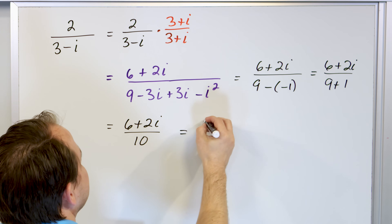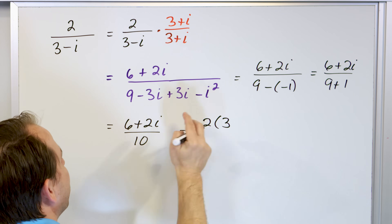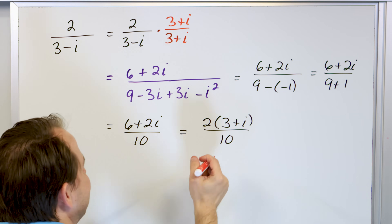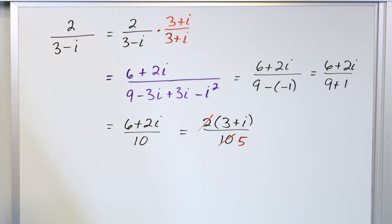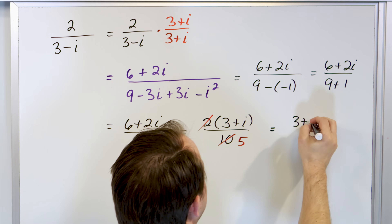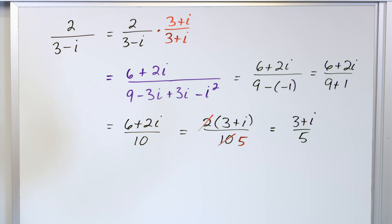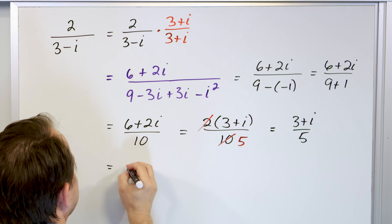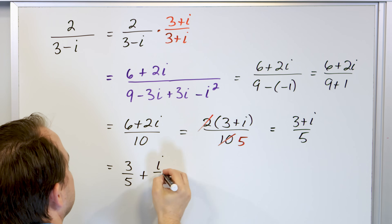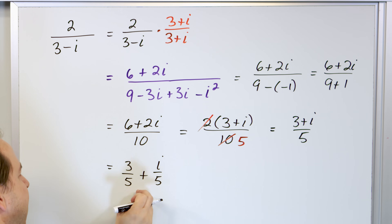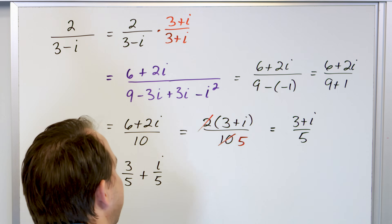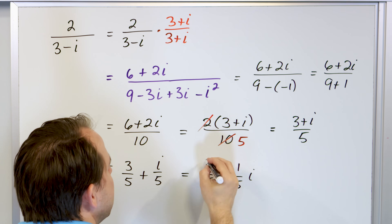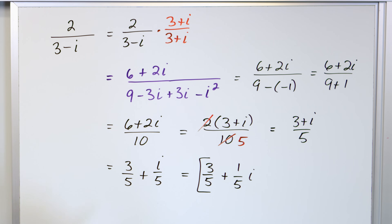We factor out a two on top: two times three is six, two times one gives us two — don't forget the i — over ten. Two divided by two is one, ten divided by two is five, giving us three plus i over five. To write it properly, break it into real and imaginary parts: three-fifths plus i over five, or better written as three-fifths plus one-fifth times i. The real part is three-fifths, the imaginary part is one-fifth.